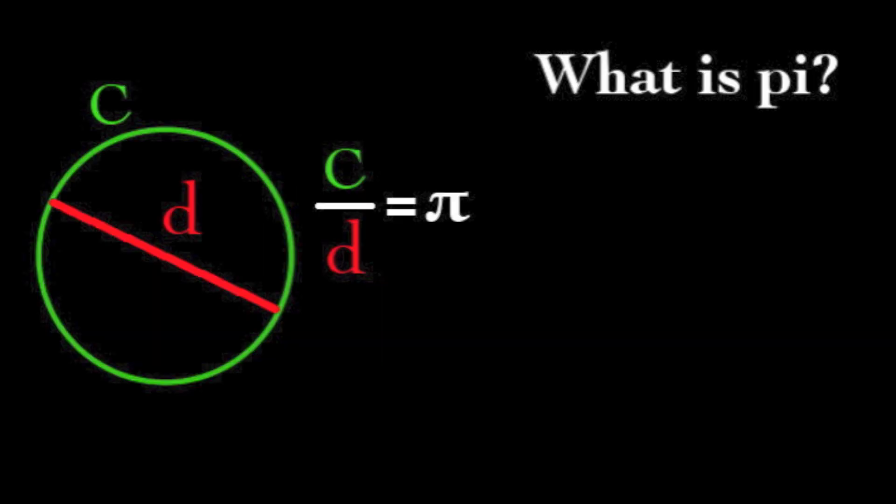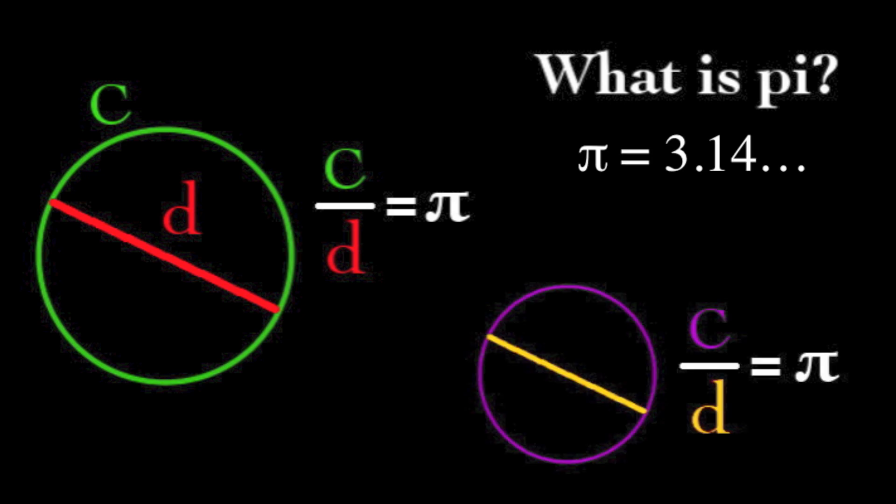Pi is the ratio of a circle's circumference divided by its diameter. No matter how big your circle is, the ratio is always the same. We call this number pi.